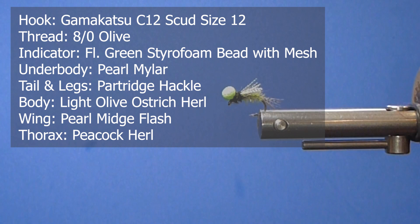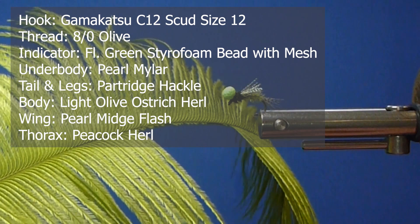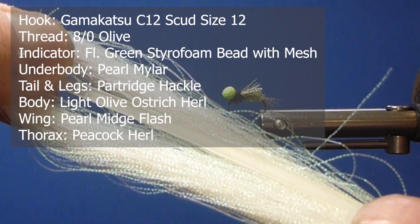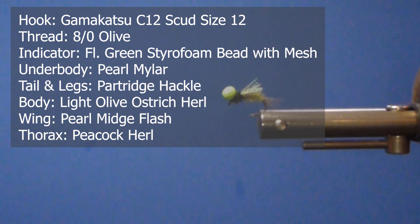For the tail and the legs I'm going to use some partridge hackle off the skin. The body we're going to use some lime green ostrich. This is a finer barbs on this one. That's what you want, the smaller barbs. The wing, we're going to be using some clear crystal flash. The midge flash is very small. And the legs on the side again, the partridge.